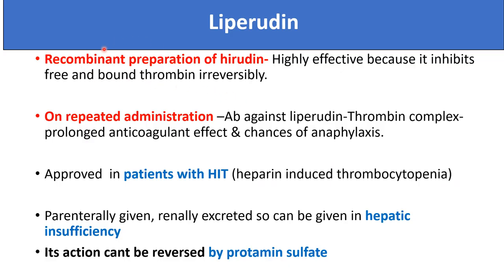Lepirudin is a recombinant preparation of hirudin. It is highly effective because it inhibits both free and bound thrombin irreversibly. On repeated administration, antibodies can form against the lepirudin-thrombin complex, prolonging the anticoagulant effect and increasing the chance of anaphylaxis. It is approved in patients with heparin-induced thrombocytopenia, is parenterally given, renally excreted, and its action cannot be reversed by protamine sulfate.